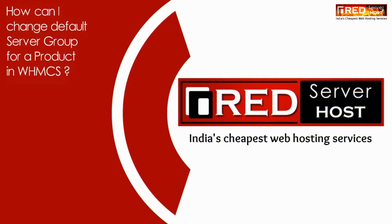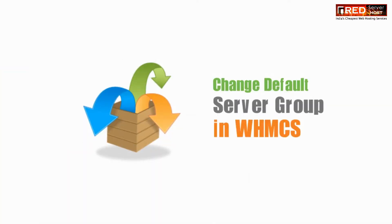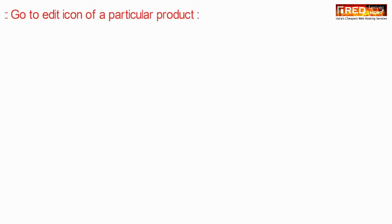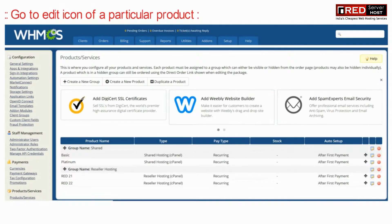Today in this video we will learn how to change the default server group for a product in WHMCS. For that, login to WHMCS and then go to Setup, then Products/Services, and then again Products/Services.